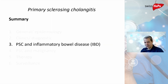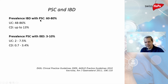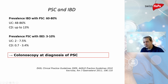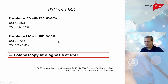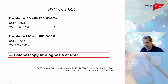PSC is frequently associated with inflammatory bowel disease. In newly diagnosed PSC patients, the chance of also having IBD is 60 to 80 percent, so at least one colonoscopy should be performed to rule out IBD. Ulcerative colitis is much more prevalent than Crohn's disease in this context, though Crohn's can also appear. Conversely, among all IBD patients, the prevalence of PSC is only 3 to 10 percent, since IBD is far more common than PSC.